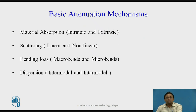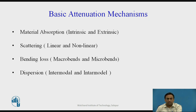Now we'll see the different types of attenuation mechanisms: material absorption, scattering, bending losses, and dispersion. These are the four major losses that occur when sending data through the fiber. Material absorption is due to intrinsic and extrinsic materials; scattering is of two types — linear and non-linear; bending losses include macro-bends and micro-bends; and dispersion is the overlapping of signals.